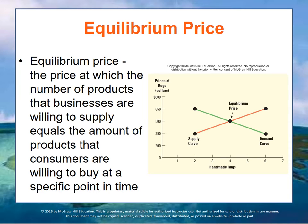The supply and demand curves intersect at a point where supply — where people are willing to sell at a price — meets the demand that people have to pay that price, so they're willing to buy that many at that price. That price creates a balance or equilibrium that is stable. The price where the number of products businesses are willing to supply equals the products consumers are willing to buy is called the equilibrium price. In our rug example, the company is willing to supply four rugs at $500 each, and the consumers are willing to buy four rugs at $500 each. Therefore, $500 is the equilibrium price for a rug at that point in time.